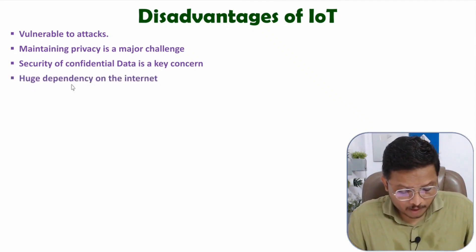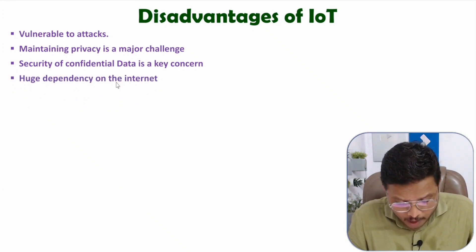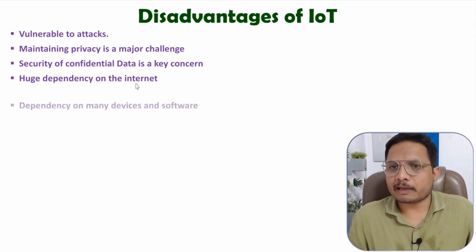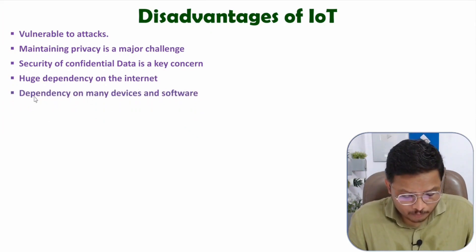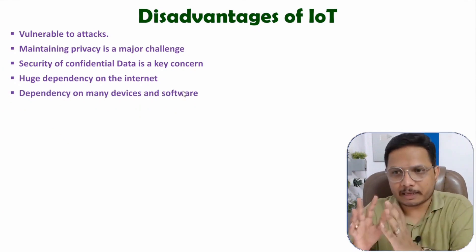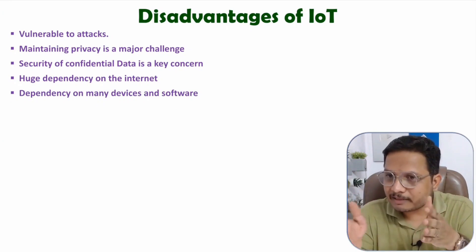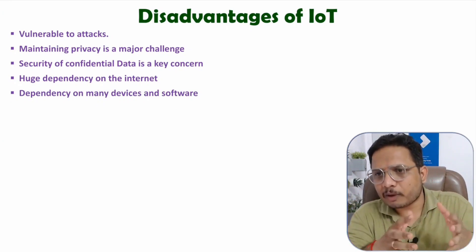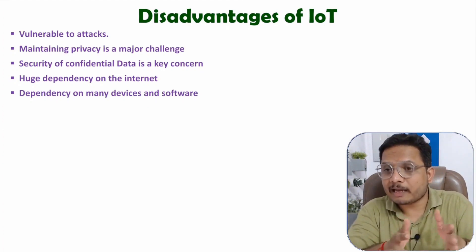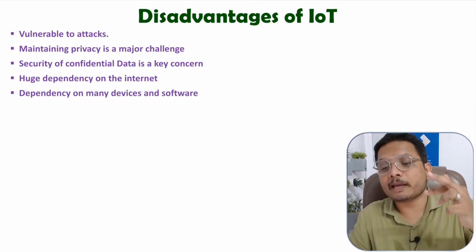This application is completely dependent on the Internet, meaning its operation and functionality rely entirely on an Internet connection. There is also a dependency on multiple devices and software, as IoT systems encompass hardware sensors, embedded systems, and software algorithms that run on the Internet. There is significant dependency on both the Internet and hardware. If the sensors fail, your system may not work properly.